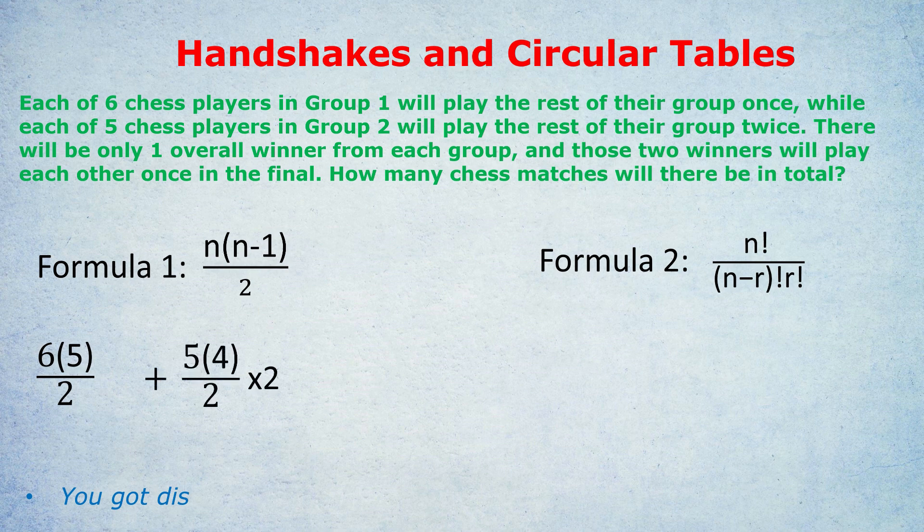And then did you notice it says the overall winner from each group is going to play each other once in the final? So we have to plus one to that answer to get the actual answer because we can't forget that final game of chess. 15 plus 20 plus 1 equals 36 matches of chess. A lot of words, but the underlying concept is simple, whichever of the two formulas you use.